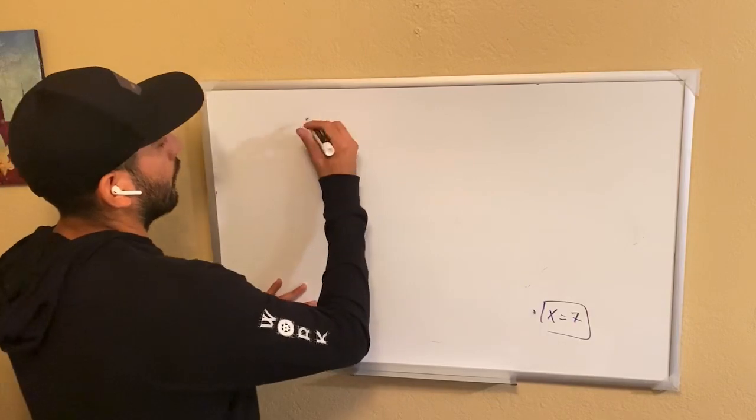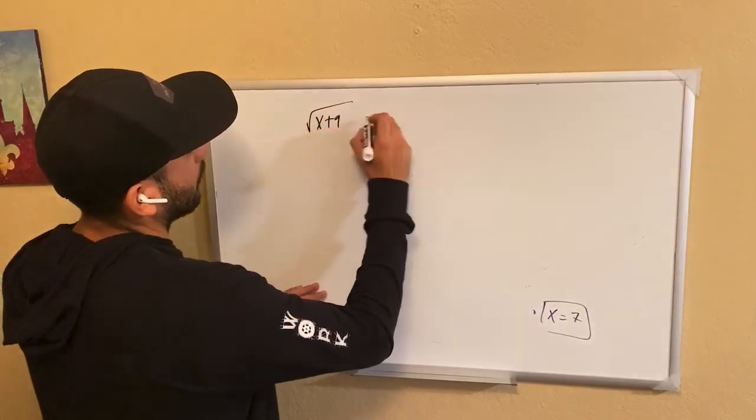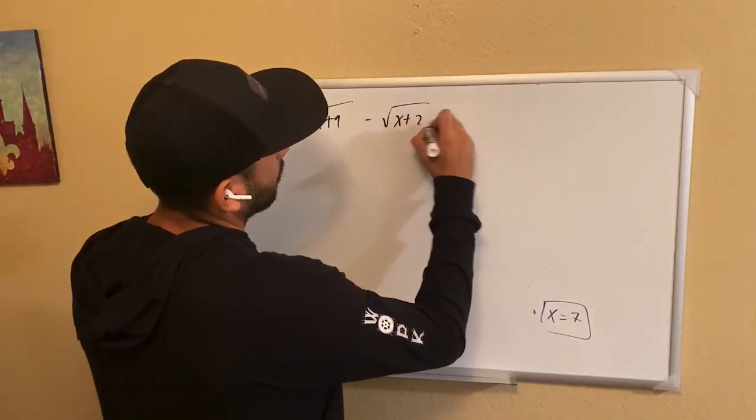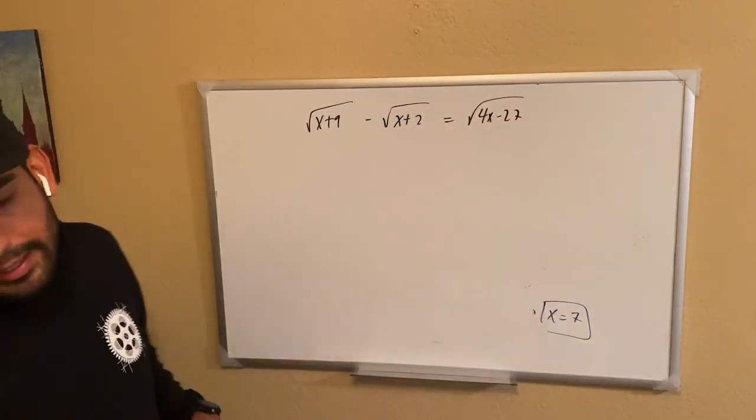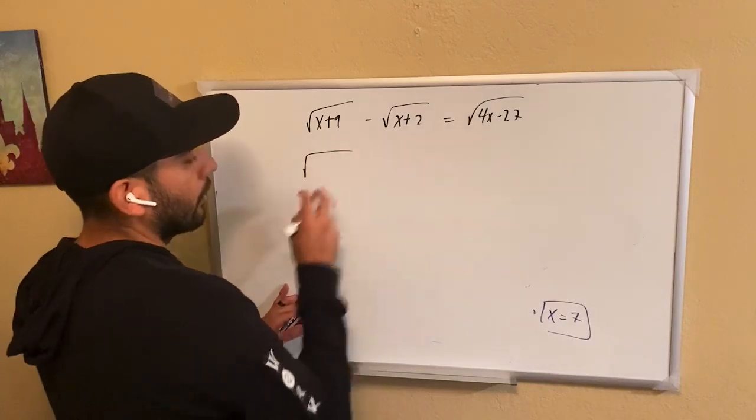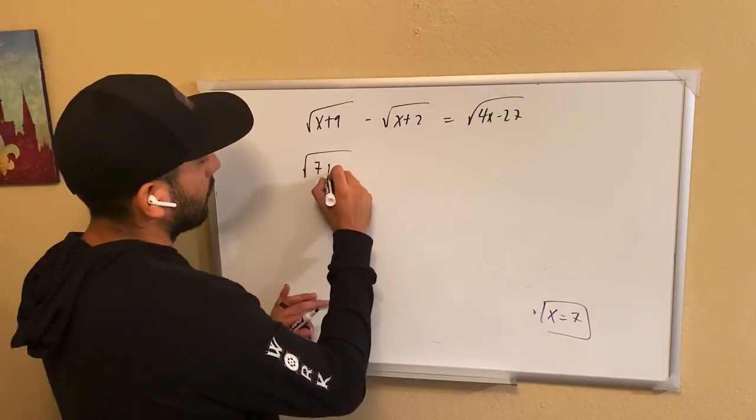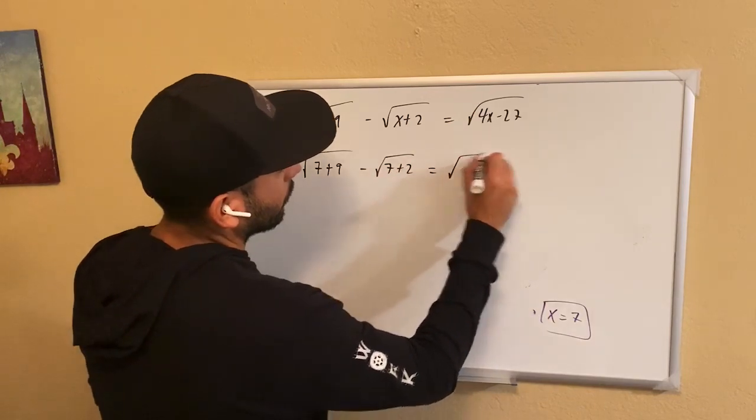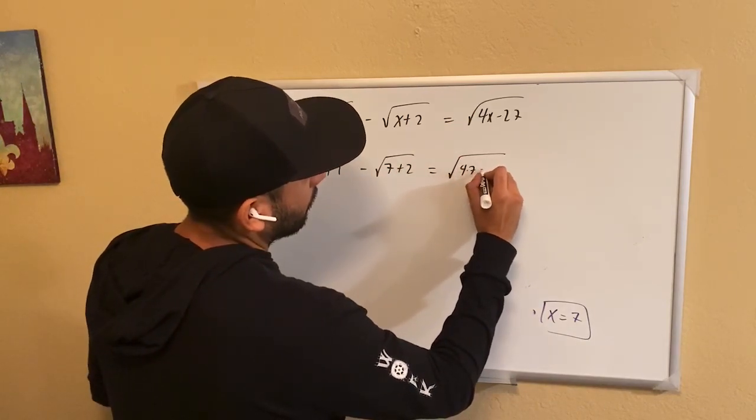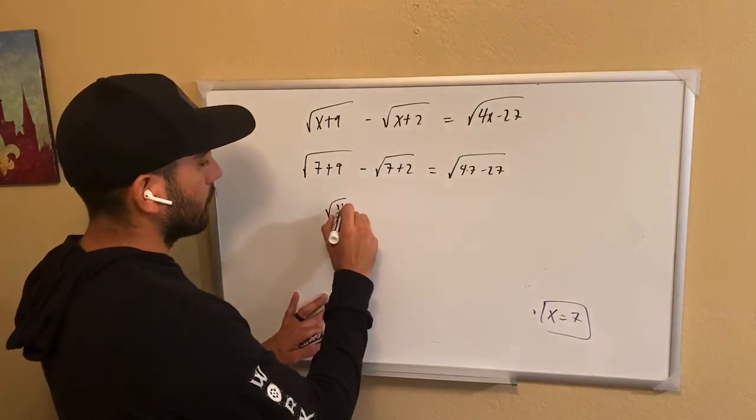Okay, so given the equation, I have root x plus 9 minus root x plus 2 is equal to root 4x minus 27. Let's go ahead and write in the 7 to the x values. So I'm going to get 7 plus 9 minus 7 plus 2 equals root 4 times 7 minus 27.